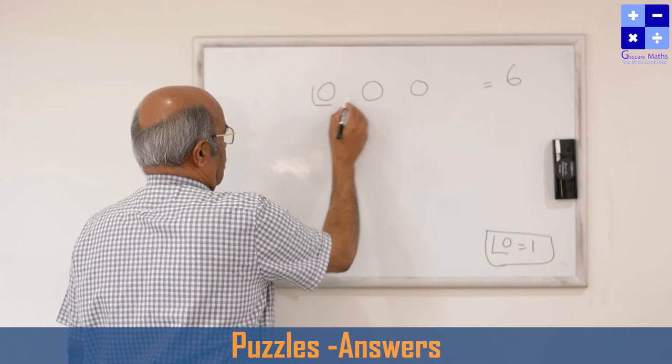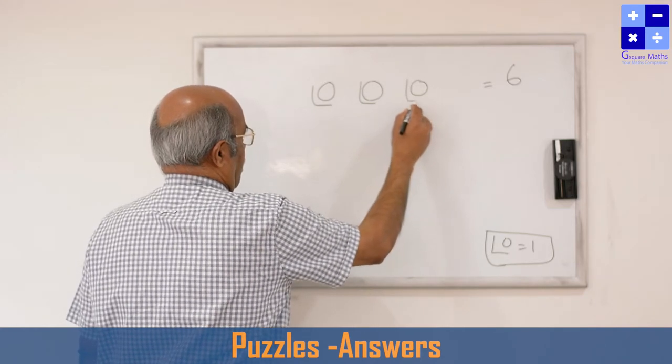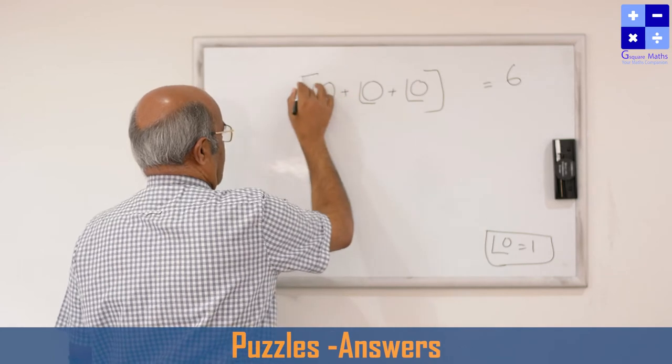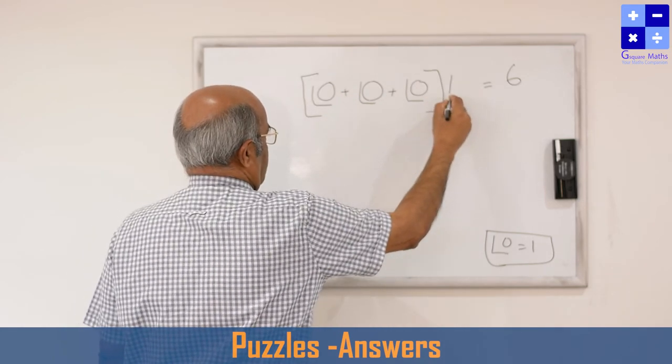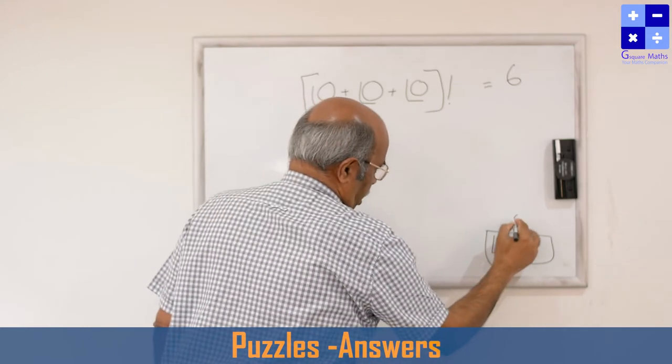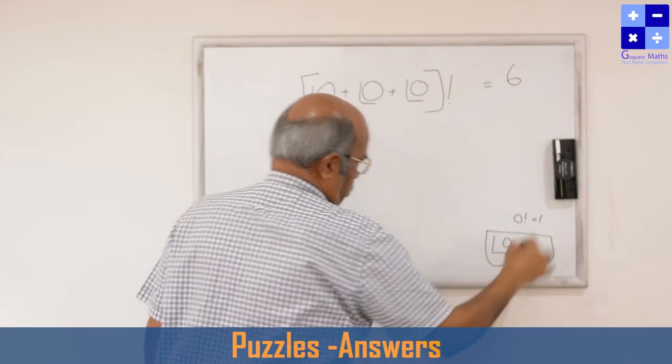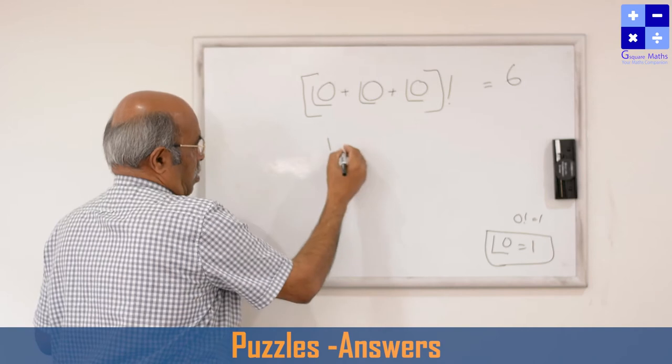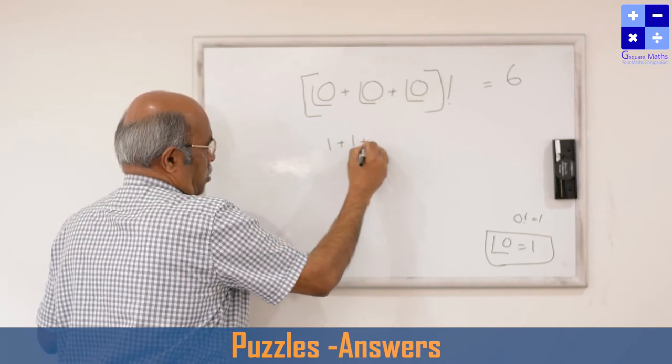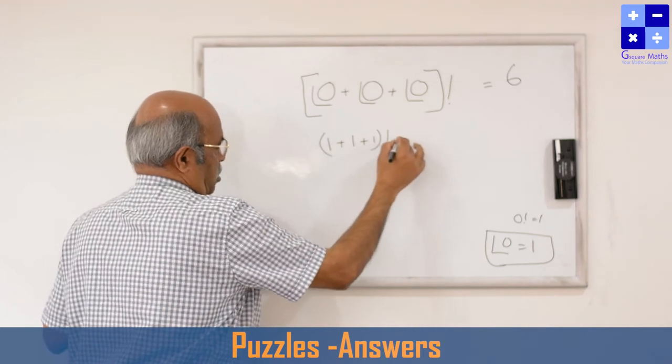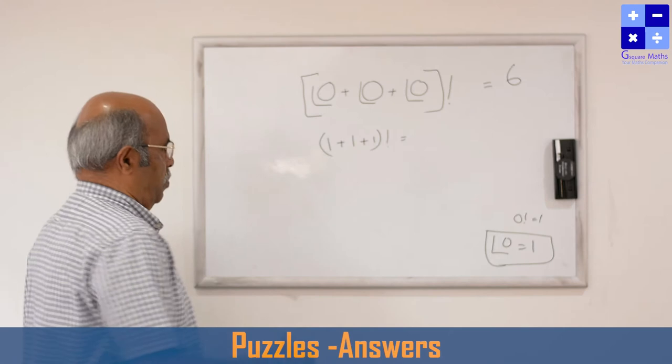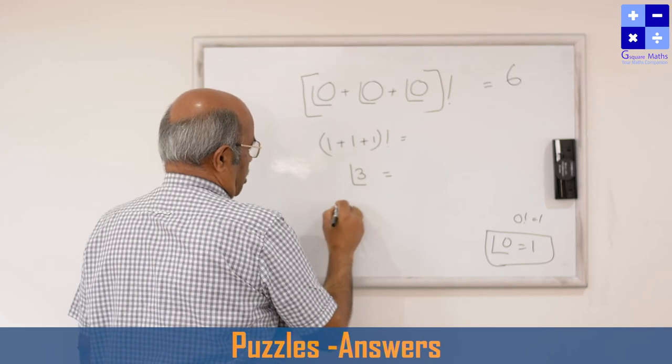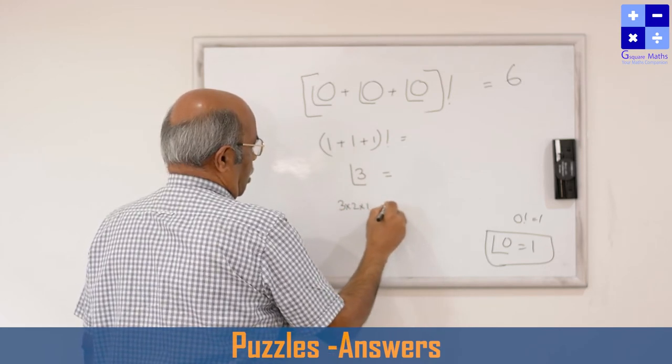I'm just adding it in a bracket and again I'm putting this factorial notation. I already told you that factorial can be put as an exclamation mark. This is also 1, so factorial 0 is 1 we know. This is also 1, this is also 1—bracket and another factorial notation. That is equal to factorial 3, which is 3 times 2 times 1, that is 6.